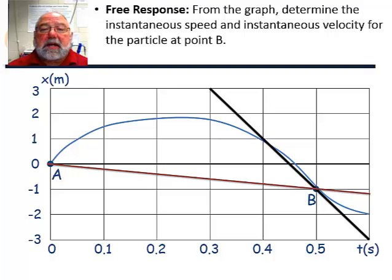And now I have a free response for you. From the graph, determine the instantaneous speed and the instantaneous velocity for the particle at point B. Now remember, I'm asking for instantaneous what it is at point B. So I drew a couple of lines that may help you. You need to pick the right line for helping you figure that out. And good luck. See you next time. Bye.